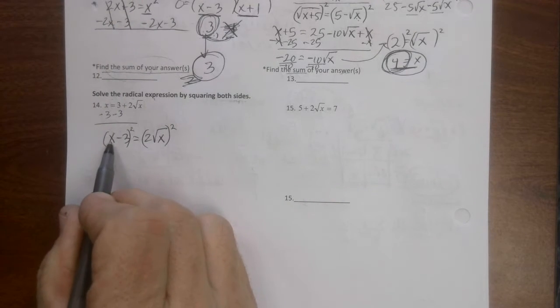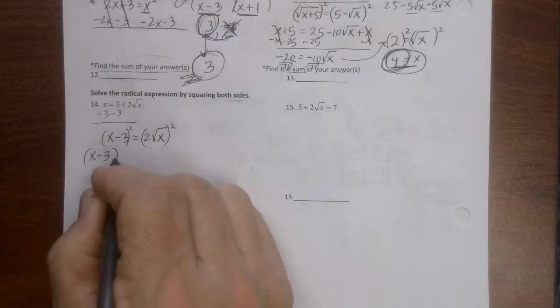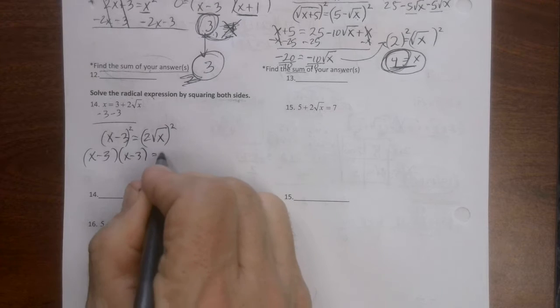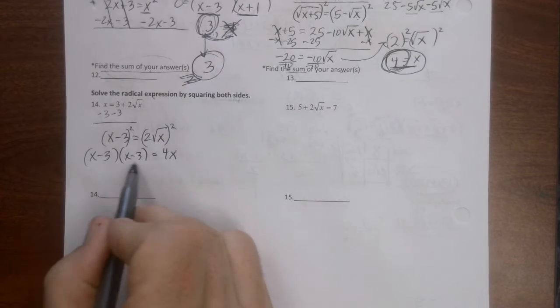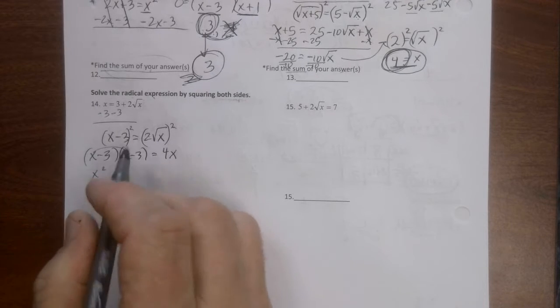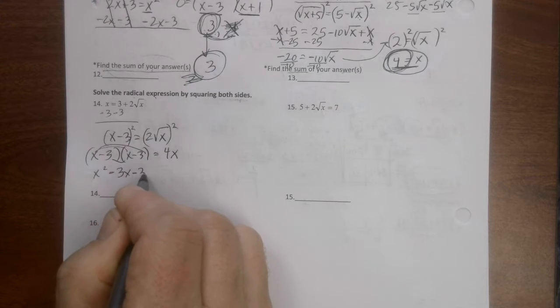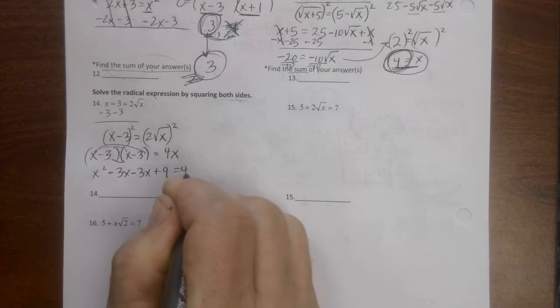So I'm going to square this right now, but square all of it. This right here—don't you dare square that and square that alone. It's x minus three times x minus three equals two squared is four, then the roof flies off x here. I have to FOIL this, so x times x is x squared.